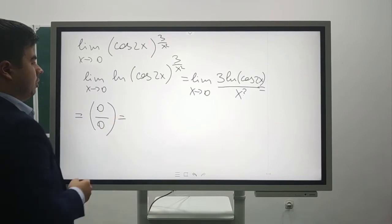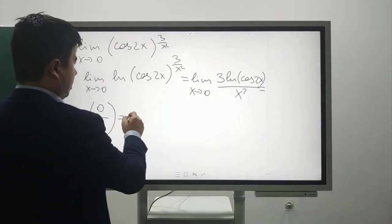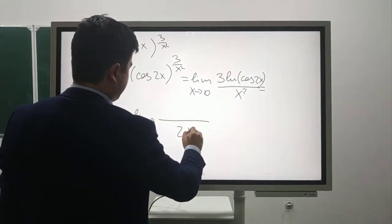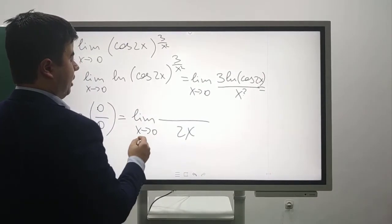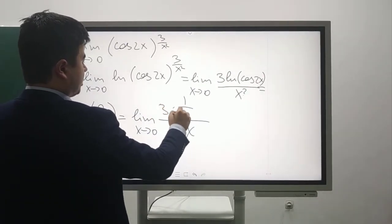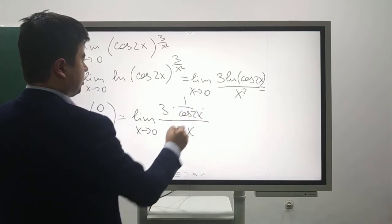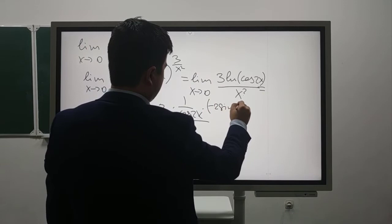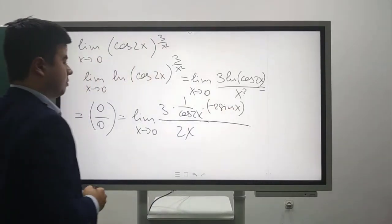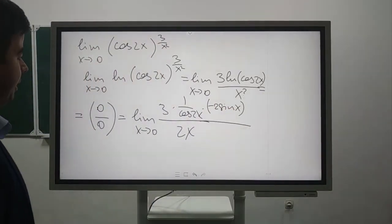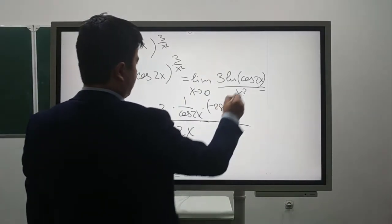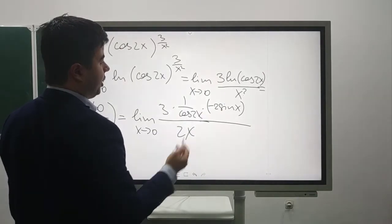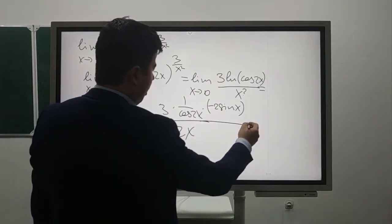Now we can use L'Hôpital's rule: the derivative of the numerator 3·ln(cos(2x)) is 3·(1/cos(2x))·(-2·sin(2x)), and the derivative of the denominator x² is 2x.